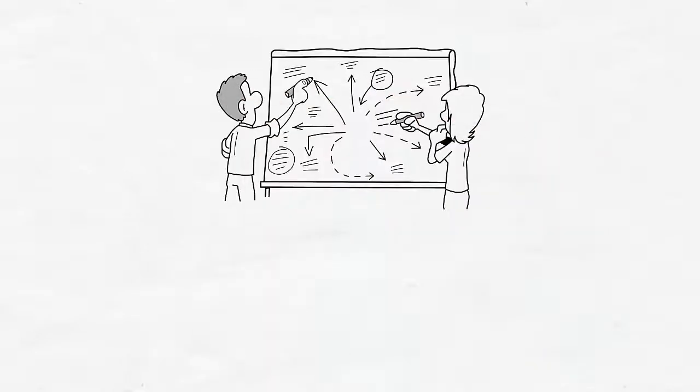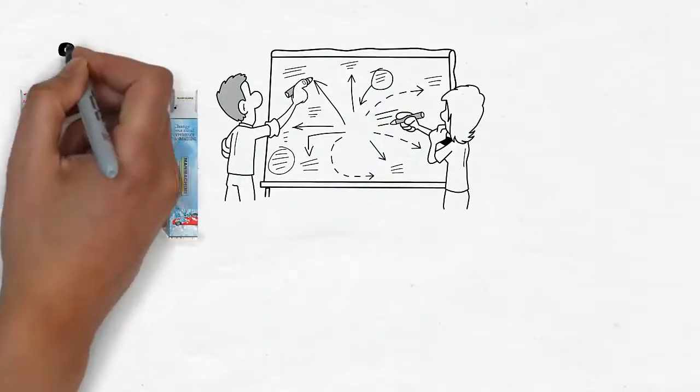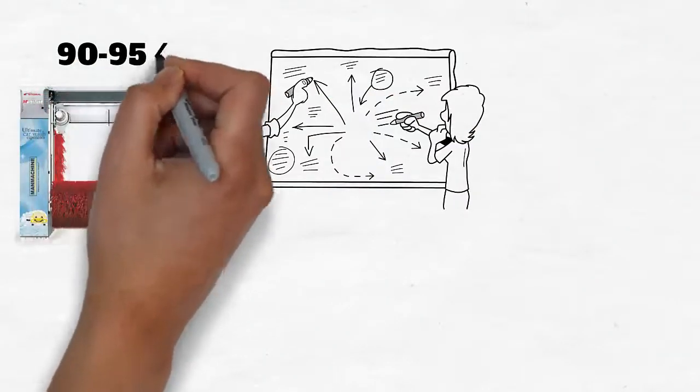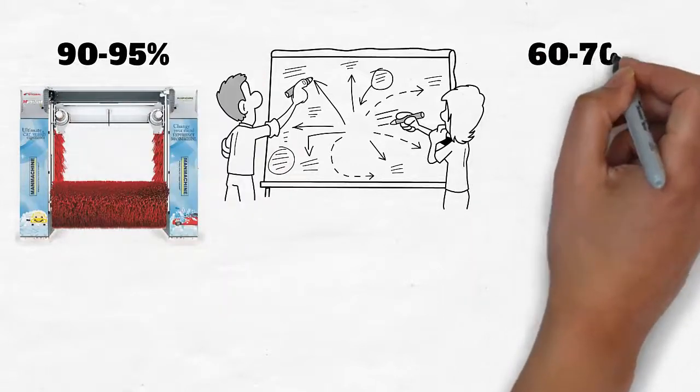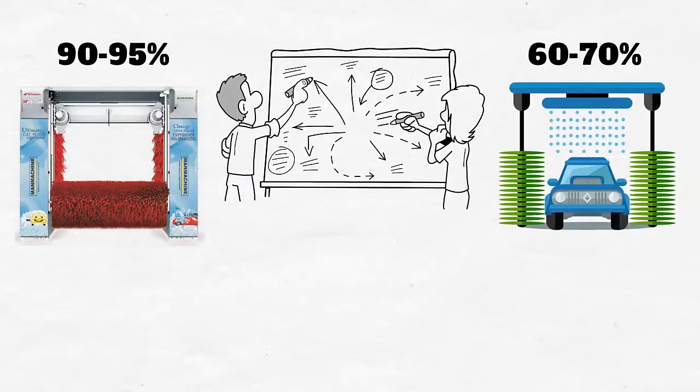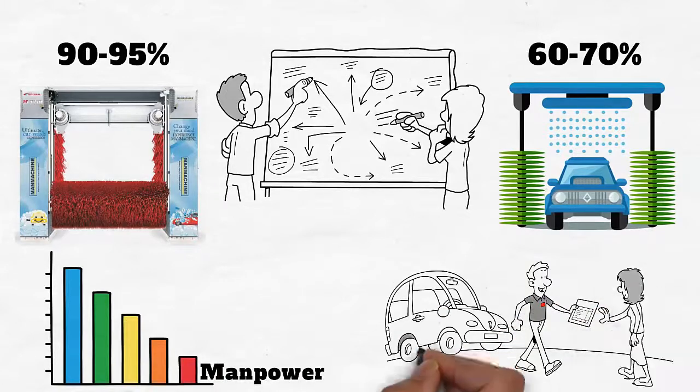Thanks to its design technology, MSTART dries a car 90 to 95% compared to 60 to 70% by local car washes, reducing manpower to deliver a car.